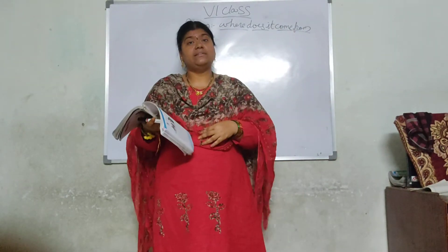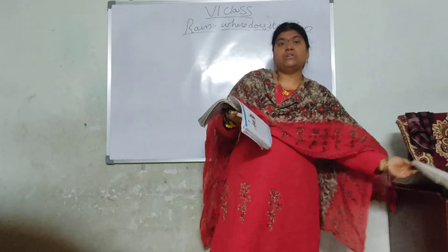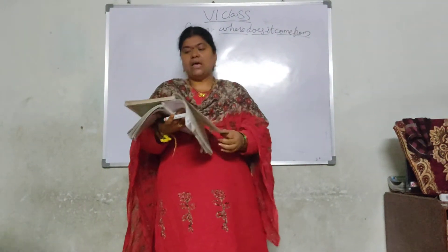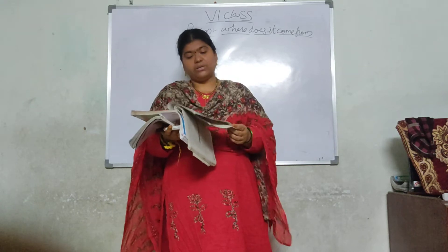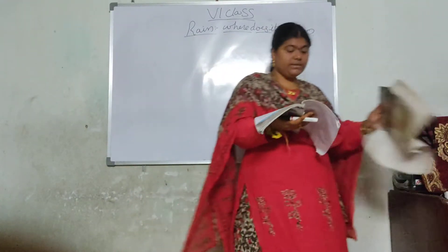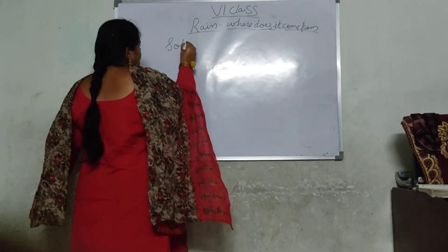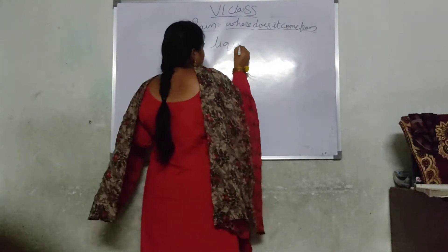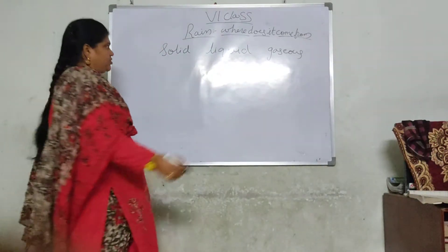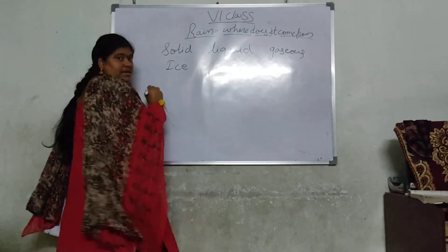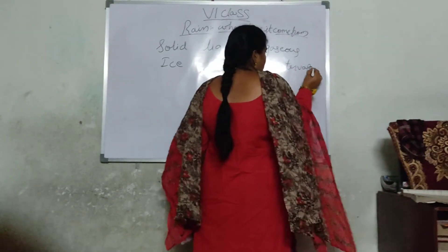Why do clouds cause rain? When clouds are formed, why do we get rains? What is the relation between rain and cloud? Why don't all clouds cause rain? To understand about clouds and rain, we need to first know something about water. Water is of three types: solid, liquid, and gaseous. Solid means ice, liquid means water, and gaseous means water vapour.